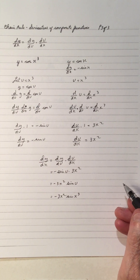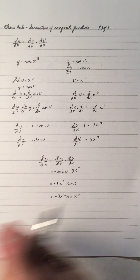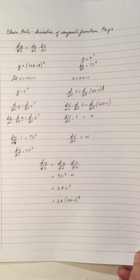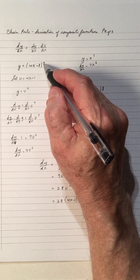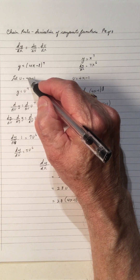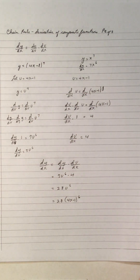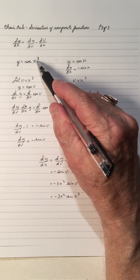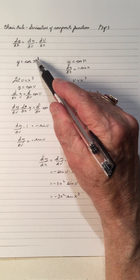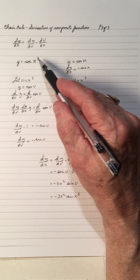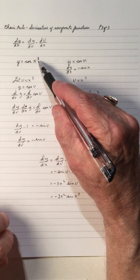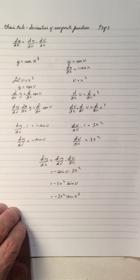So that's two examples. In the first one, we had a power, so we did the power rule and then the derivative of 4x minus 1. Here, x cubed is inside the cosine, so we did the derivative of cosine first, then the derivative of x cubed.